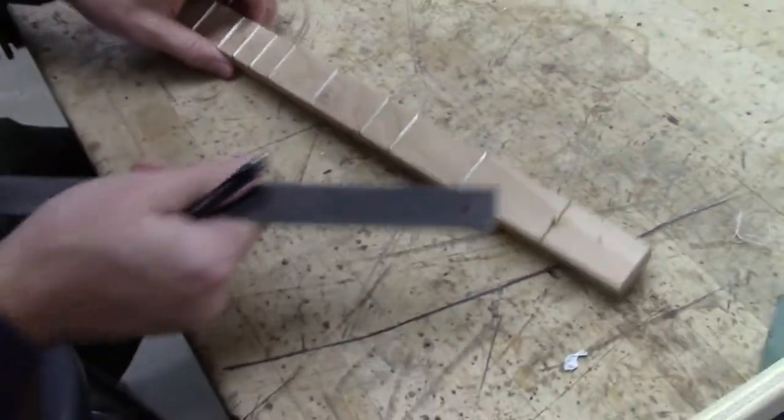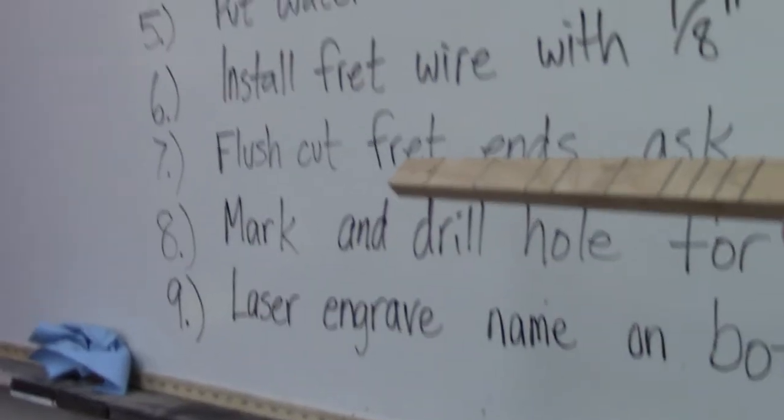Okay. Put our ruler away, and then we're going to go to the drill press to drill down. So this is step eight, mark and drill hole for tuning machine.